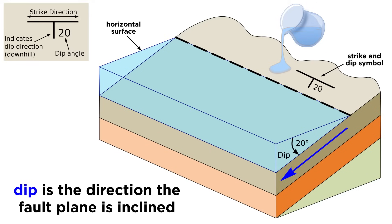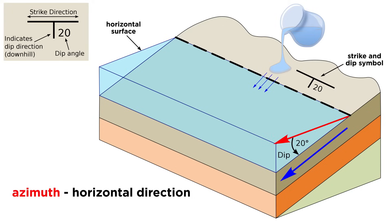To conceptualize this, imagine that you pour a cup of water onto an inclined surface. The direction that the water flows is the dip, which has two components: an azimuth representing a horizontal direction, and an angle representing the steepness of the plane.